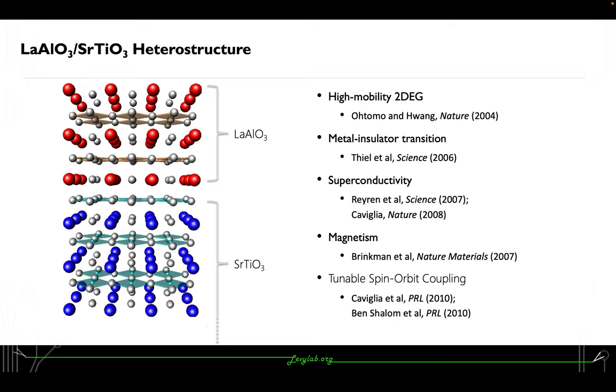It also has Rashba spin-orbit coupling. All these properties make this a great platform for quantum electronics, and we're really interested in it, especially with the metal insulator transition.